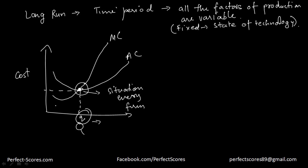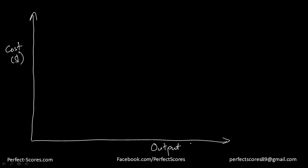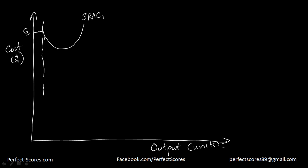Let's go ahead and see what happens. So this is our cost on the vertical axis and this is our output in units on the horizontal axis. I'm talking about the long run. Let's suppose this is one of the short run average curves — short run average curve one. Right now the company is at a particular cost: it's incurring C3 cost and producing Q1 units.